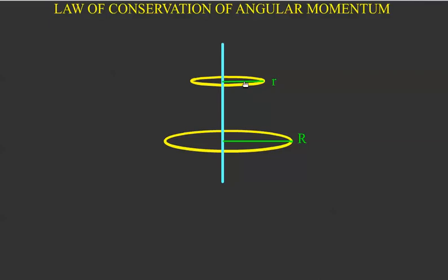This perpendicular distance is less than this capital R. We know the moment of inertia is given by MR squared. M is mass of the bob and R is this perpendicular distance. Here also I equals M small r squared.